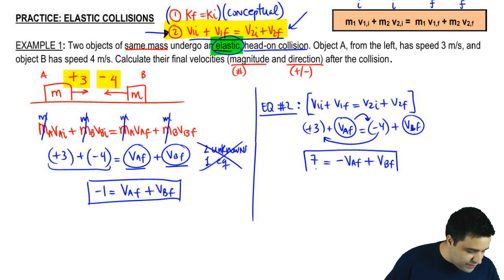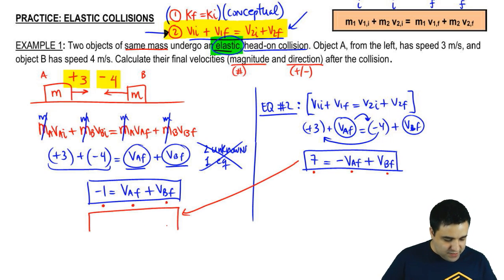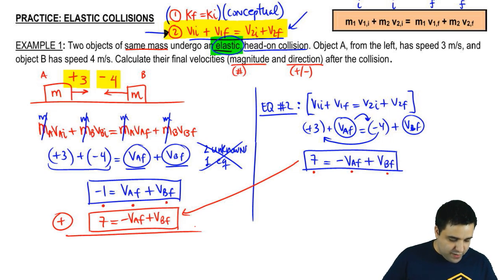Now, notice that these two equations have the same basic structure. Number, an A, and the B. A number, the A, and the B. So, what I can do now is I can move this guy over here, and we're going to combine these two equations. The easiest way to do this is by adding the equations. Let's stack them up on top of each other. Here, you can add equations. Remember that?